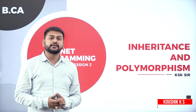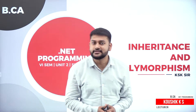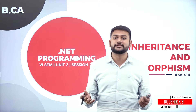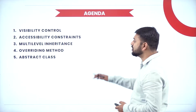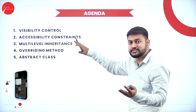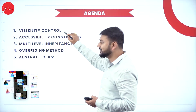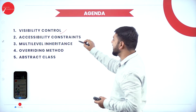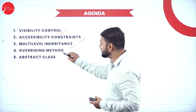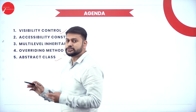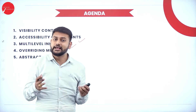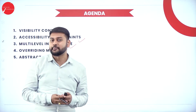Hello everyone, I welcome all of you to yet another interesting session on inheritance and polymorphism. In this session, I will be discussing some very important things in this chapter: visibility control, accessibility controls, multi-level inheritance, overriding methods, and abstract classes. This is going to be a very interesting topic. So let's understand how exactly visibility control works.